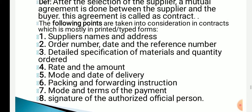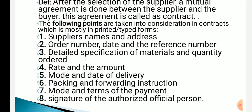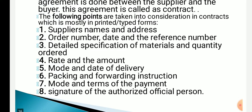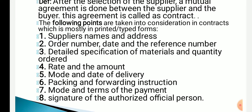The contract is mostly printed and contains: supplier name and address, order number, date and reference number, detailed specification of the material, quantity ordered, rate and amount, mode and date of delivery.